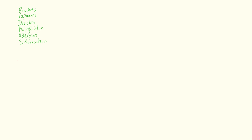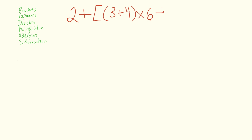Let's tackle a problem involving the order of operations. We're going to do 2 plus, open bracket, open bracket, 3 plus 4, close bracket, times 6, divided by 3, close bracket. We're going to use the order of operations here. First step is to do the brackets. There's an inside set of brackets and an outside set of brackets. We deal with the inside first, so we're going to tackle 3 plus 4. 3 plus 4 gives us 7.